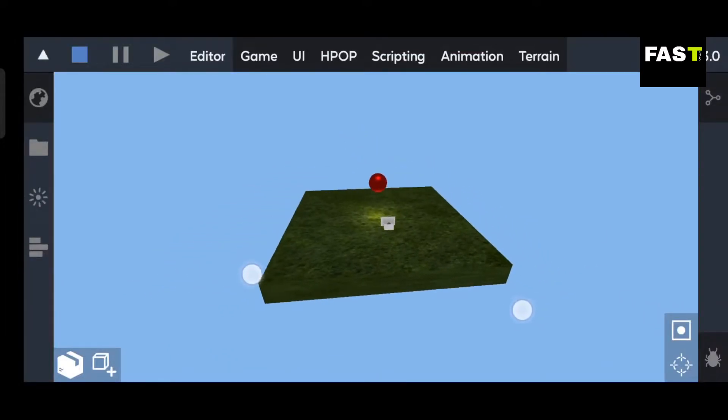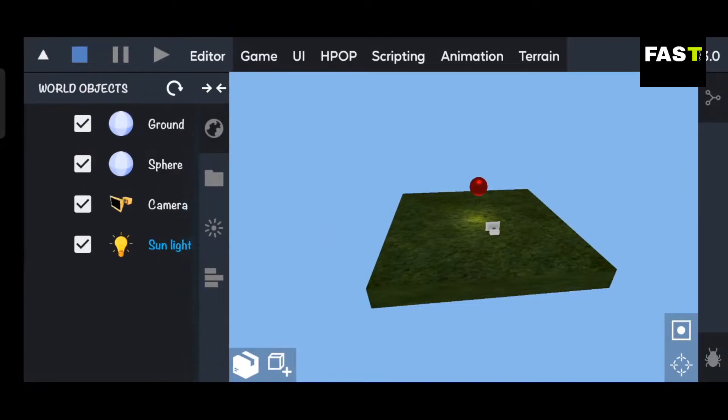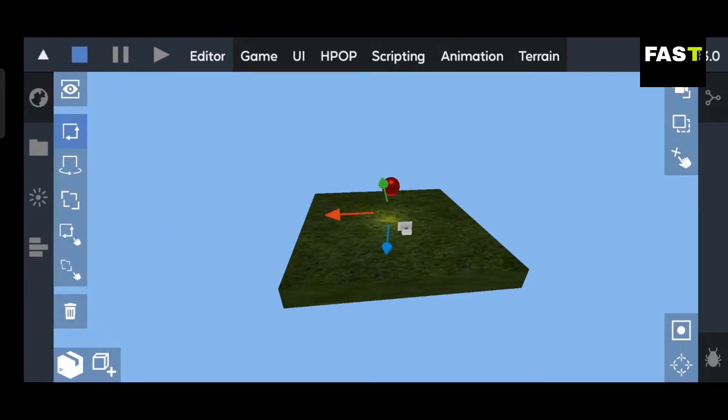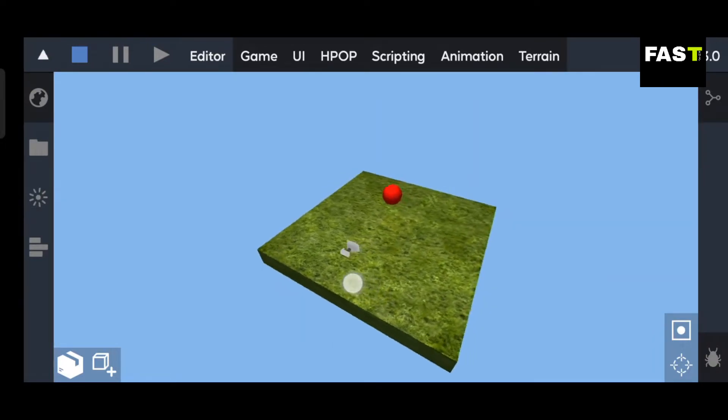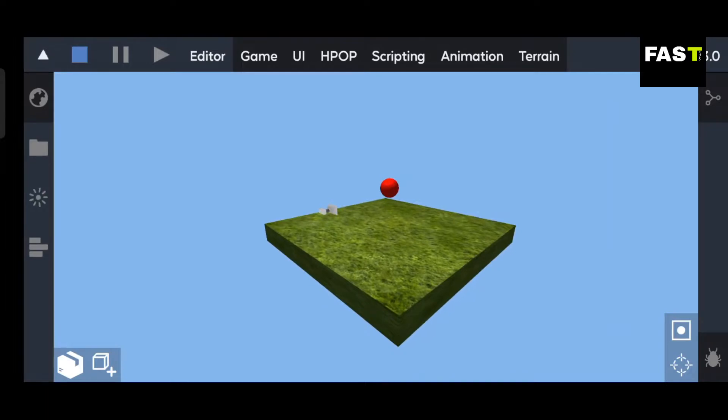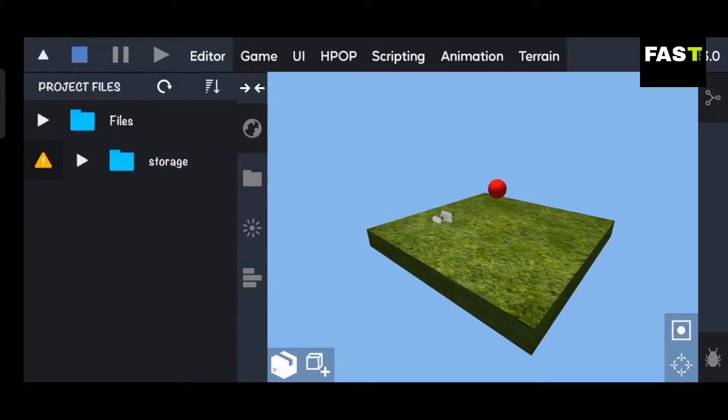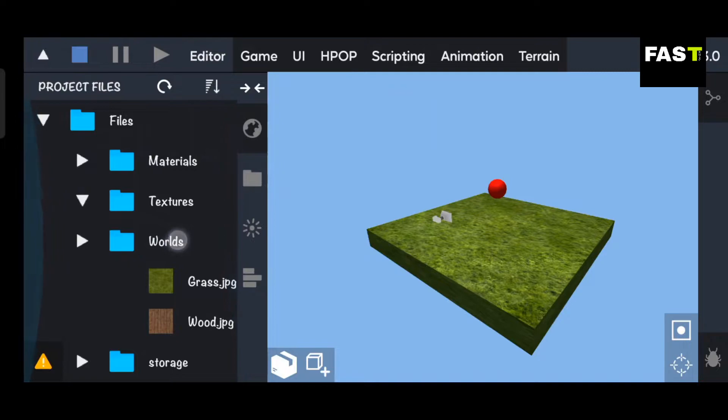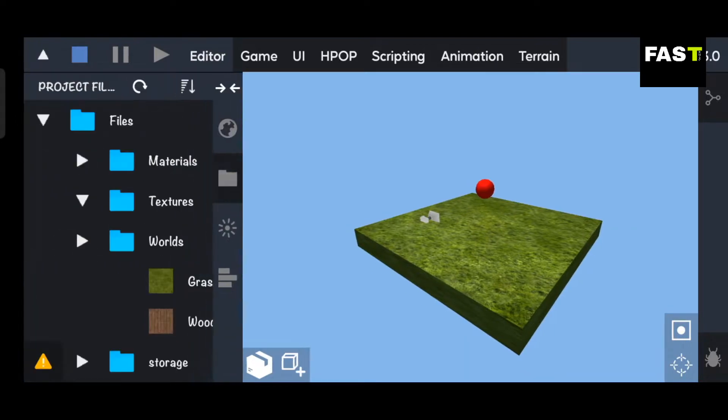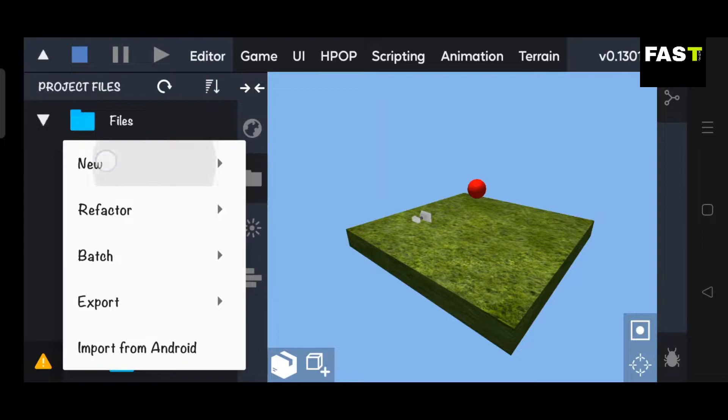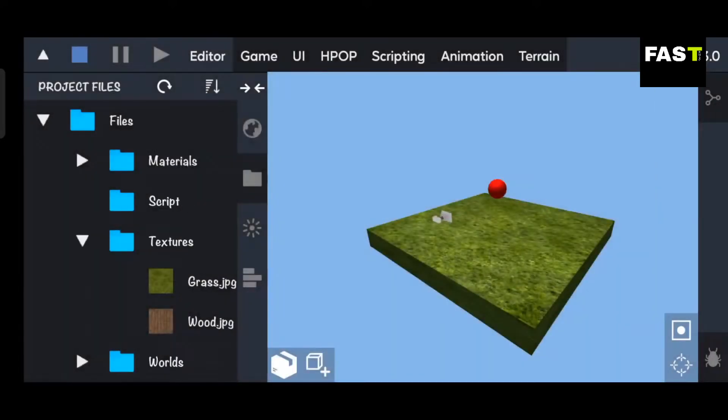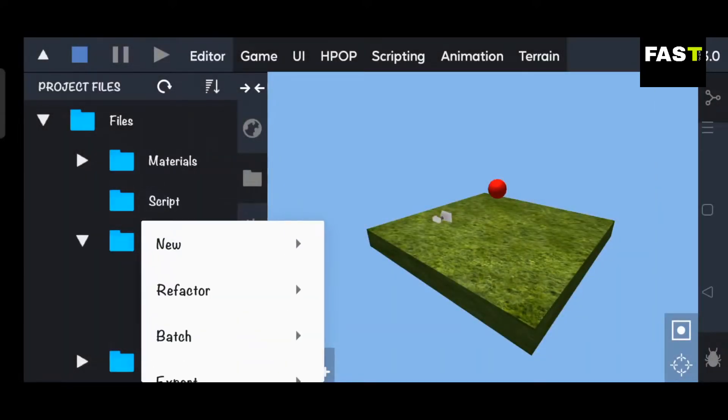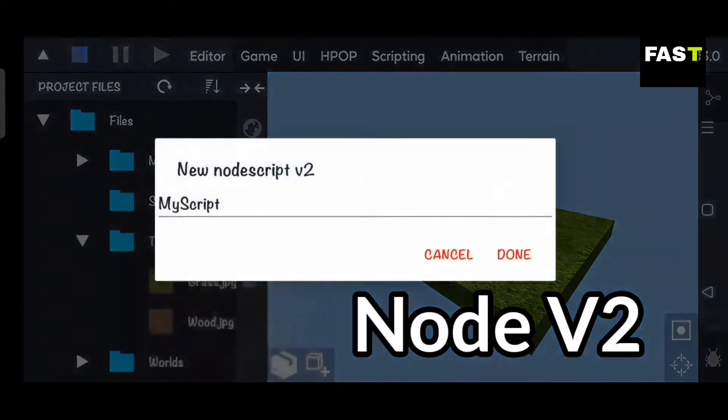Now create a new project in Itsmagic Engine and open it. Now create a new folder for our scripts. Create a Node V2 script in this folder.